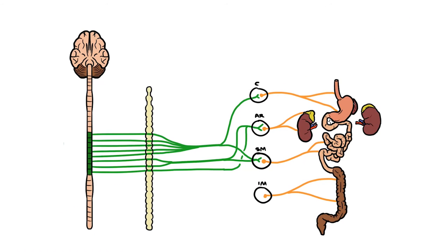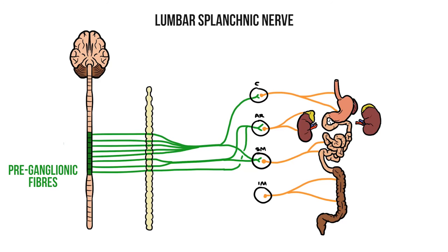That's pretty much everything I wanted to cover, but I possibly left you with two important questions. First, what about our inferior mesenteric ganglion — where does this get preganglionic fibres from? Well, for this we have a separate nerve known as the lumbar splanchnic, that originates from L1 to L3. Fibres in this nerve take exactly the same path as before, passing through the chain without synapsing and continuing until they reach the ganglion.